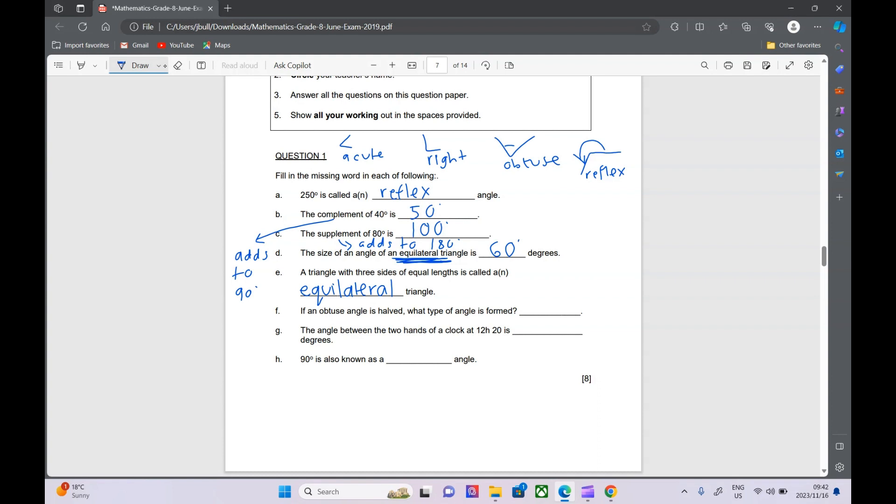If an obtuse angle is halved, what type of angle is formed? So an obtuse angle has to be less than 180 degrees. It could be 179 degrees. If we halved 179 - 179 divided by 2 is 89.5. So that would be an acute angle. Any angle that is obtuse, if we half it, we are going to get an acute angle because it's going to be less than 90 degrees.